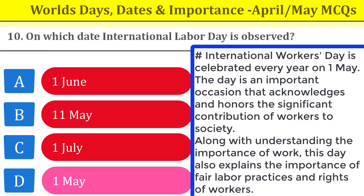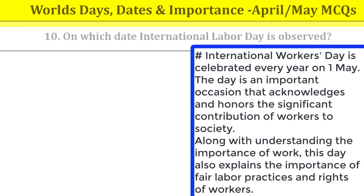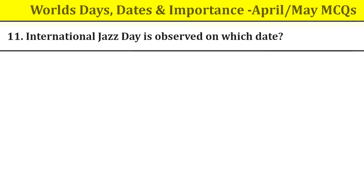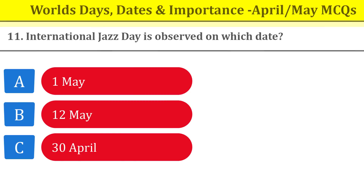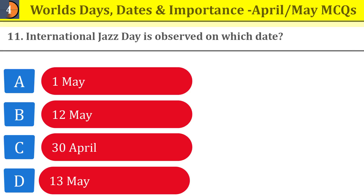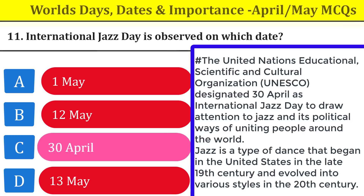Dear students, I am covering international days in this video. Question number eleven: International Jazz Day is observed on which date? This day is observed on 30th April. International Jazz Day draws attention to jazz and its power in uniting people around the world. Jazz is a type of music that began in the United States in the late 19th century and evolved into various styles in the 20th century.